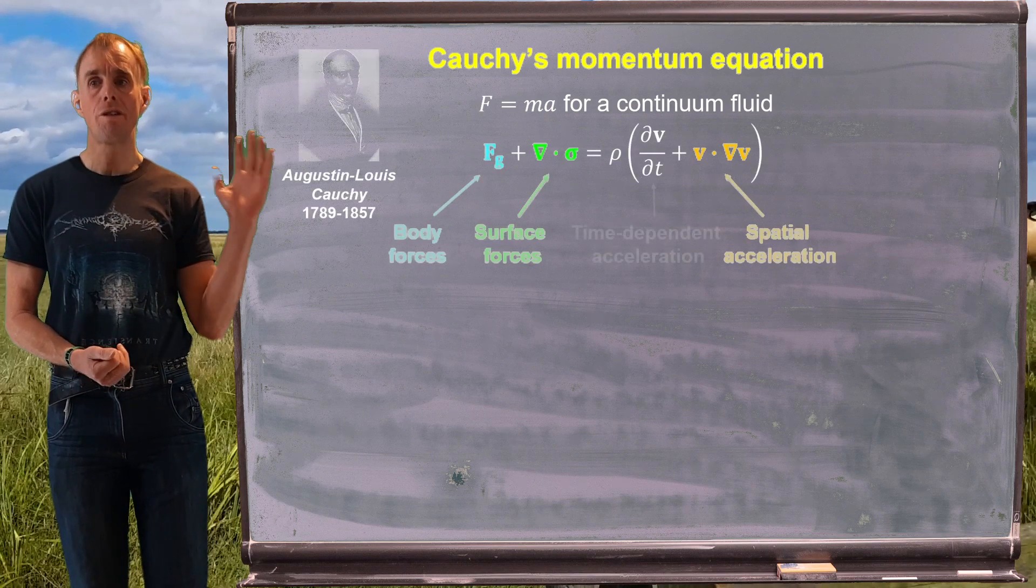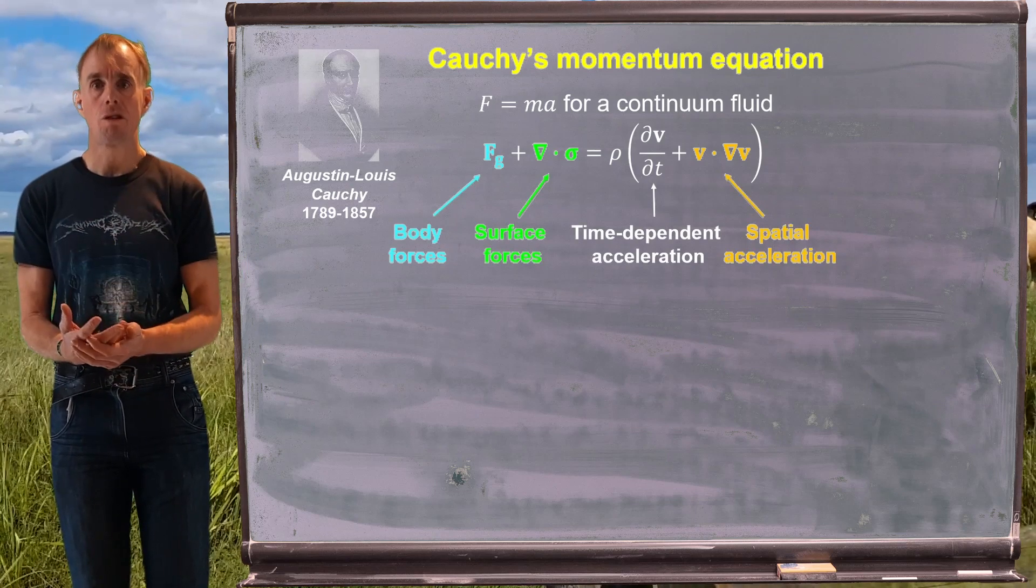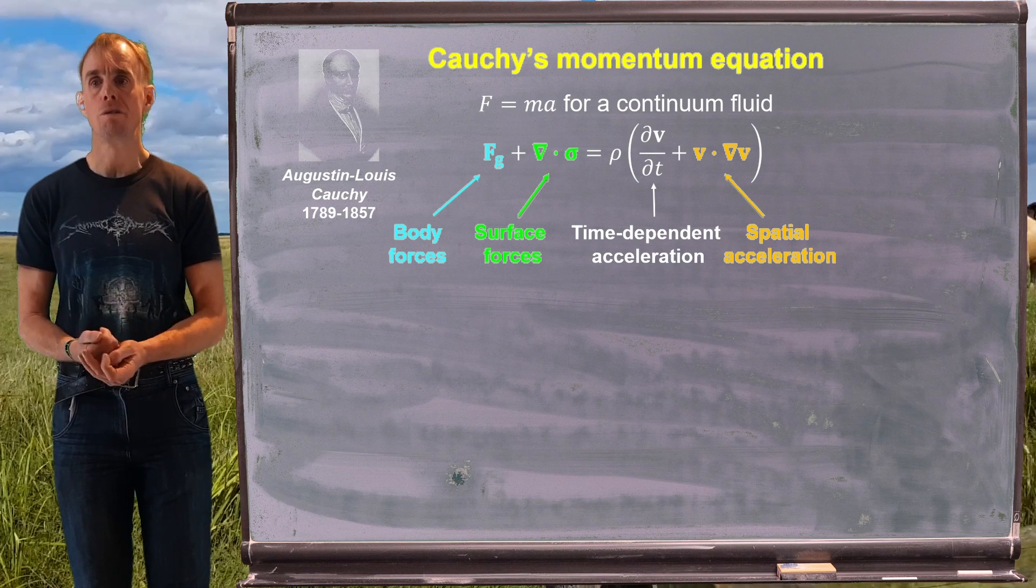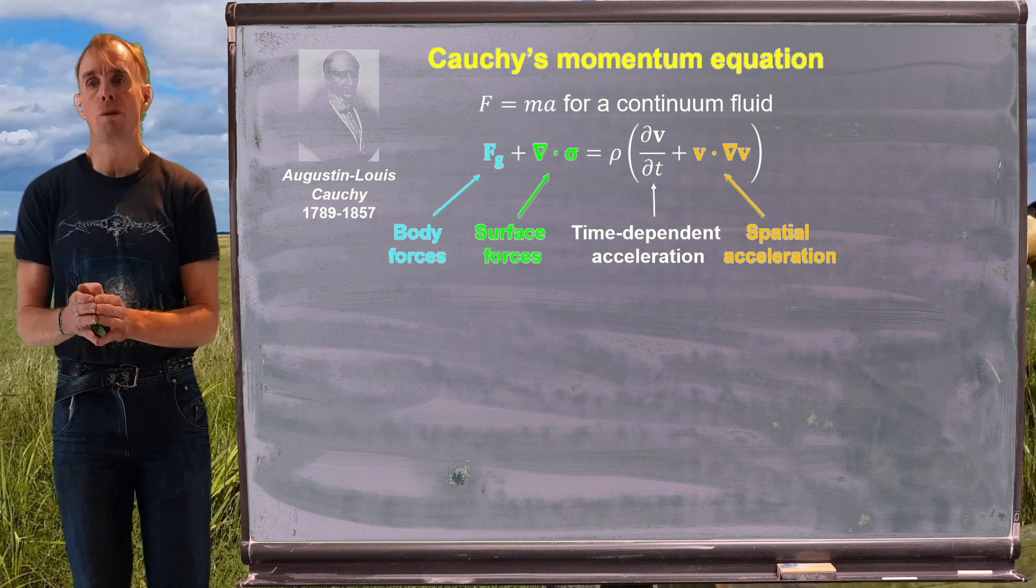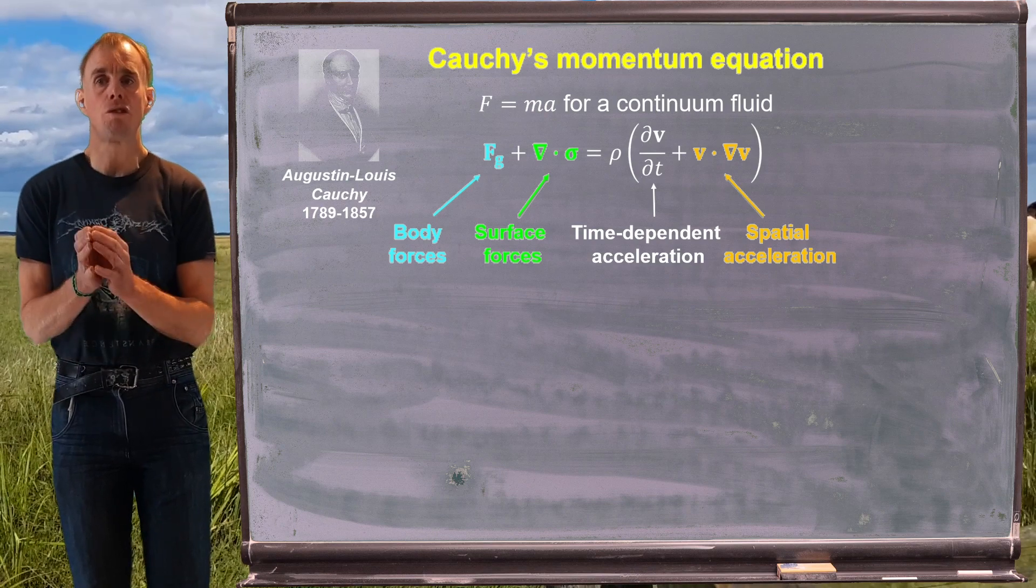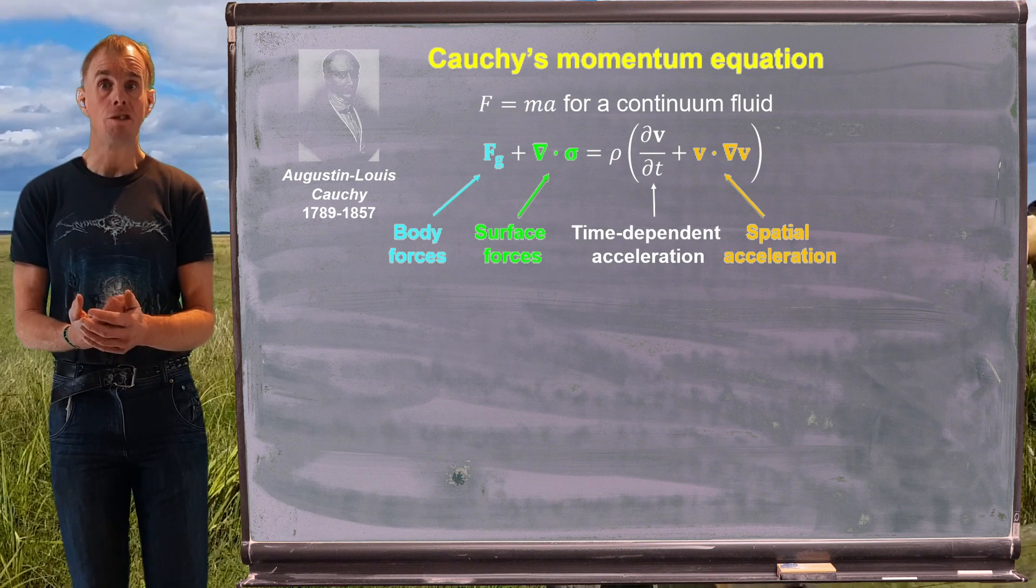And the result that we got consisted of a volumetric statement of forces, so we've got forces per unit volume. The forces consisted of forces that act on the bulk of a fluid, body forces, that act on the surfaces of a fluid element, surface forces, the mass per unit volume, the density,